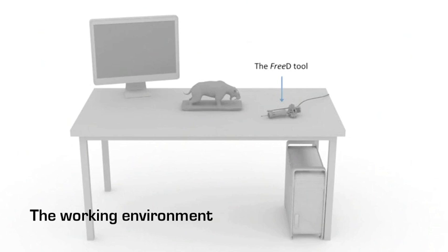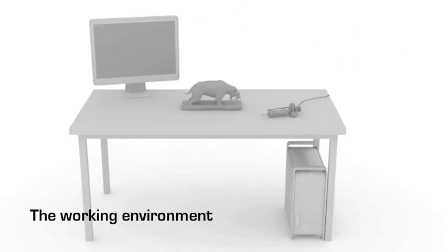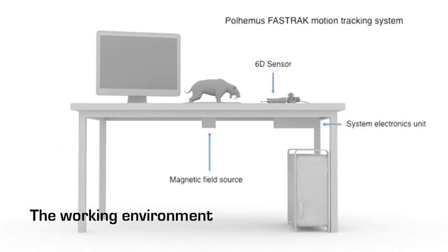The working environment has several parts, including a computer that runs the main control software and holds the 3D CAD model of the planned work. The magnetic tracker gives an accurate location and orientation in space.